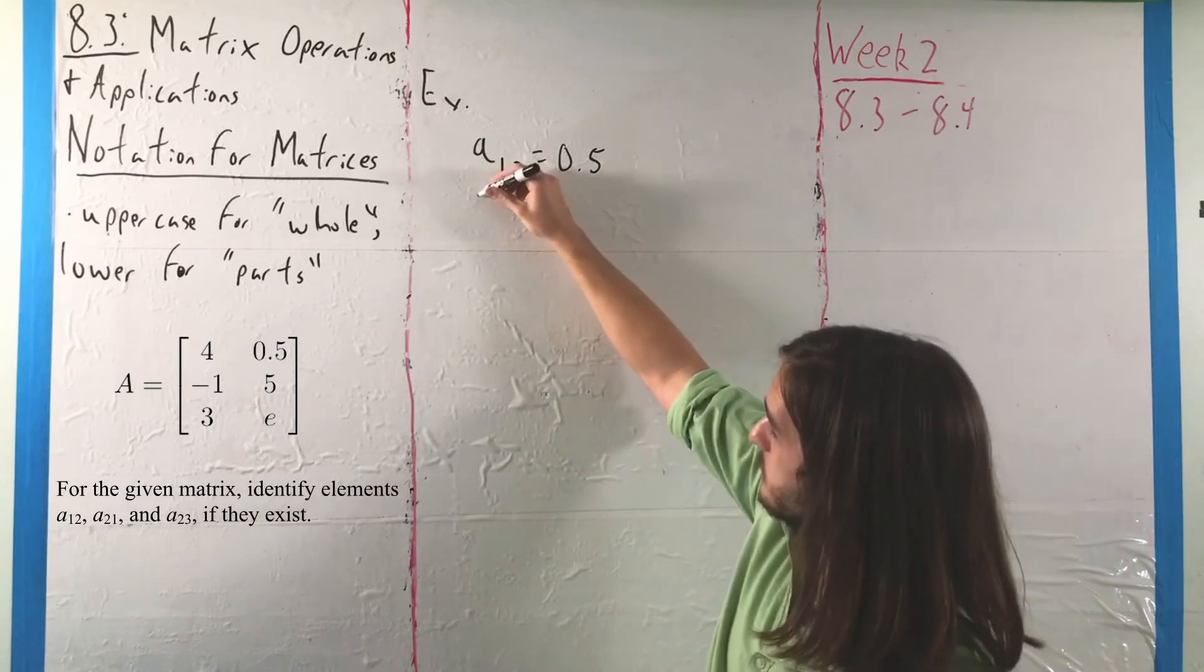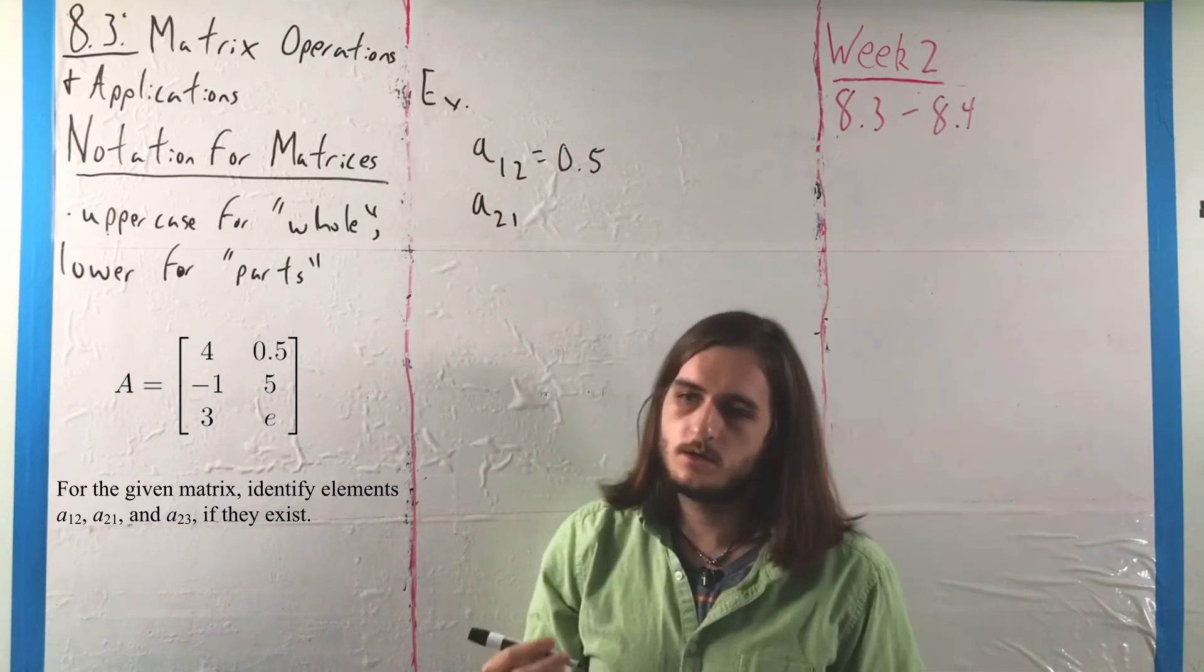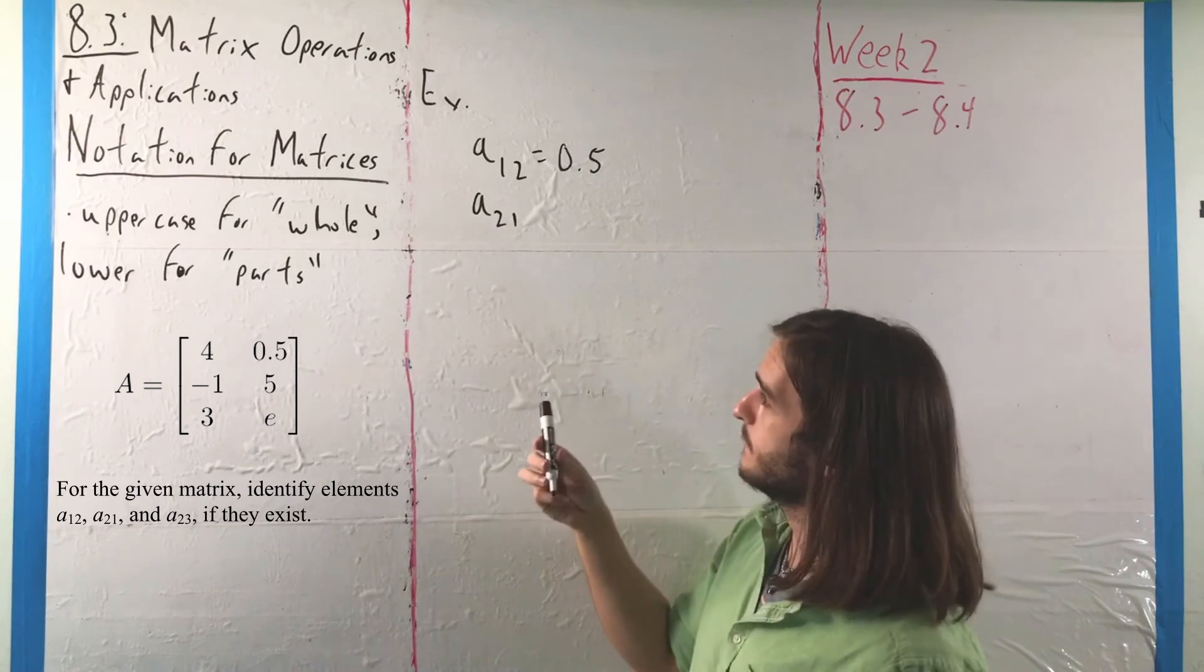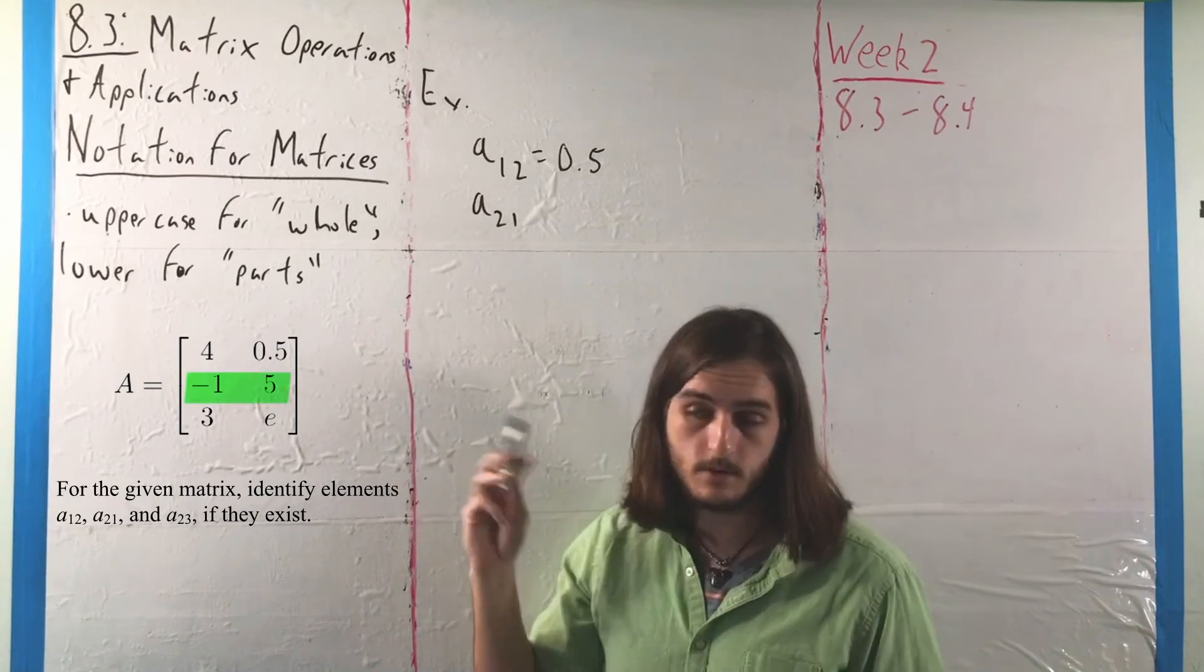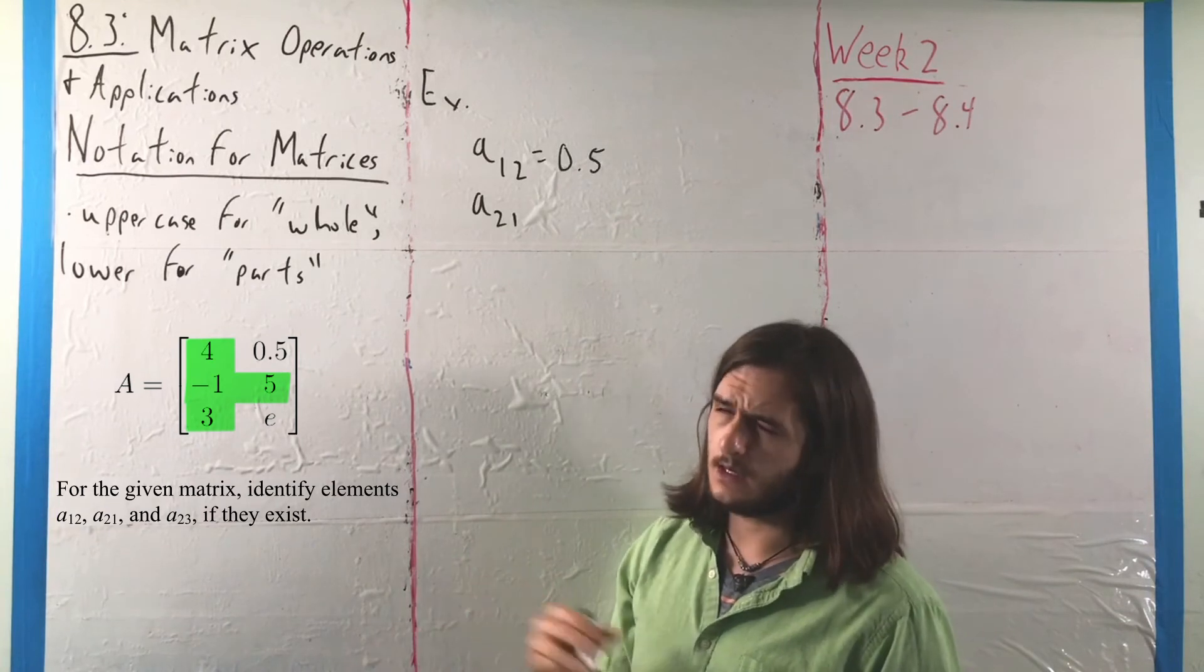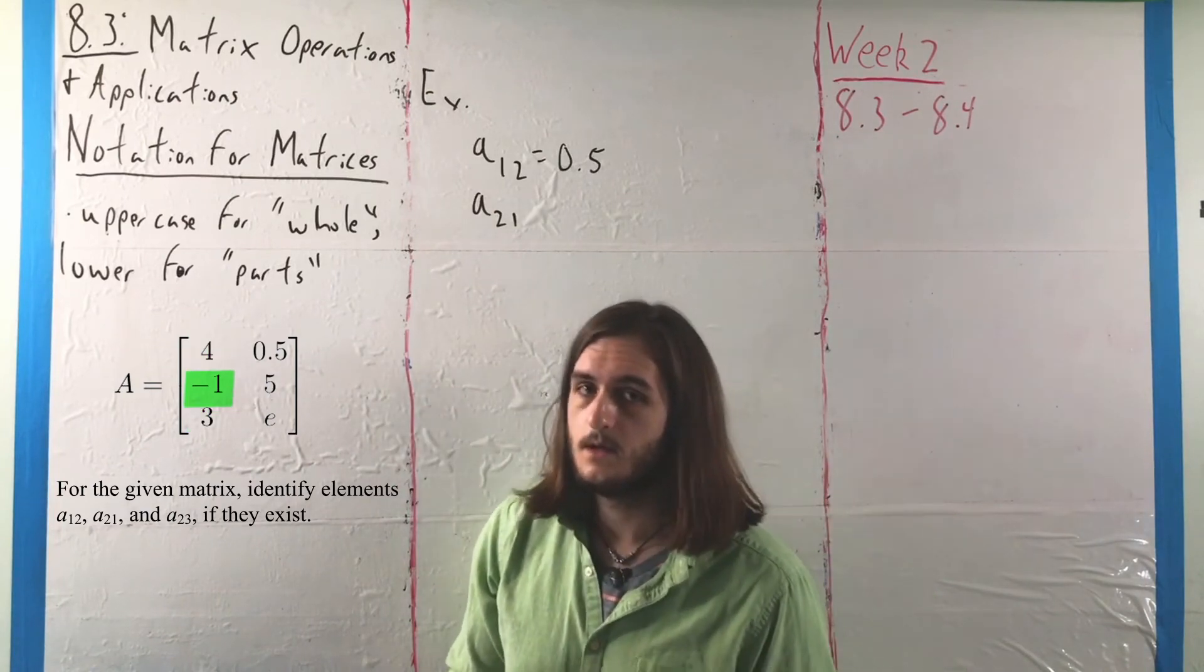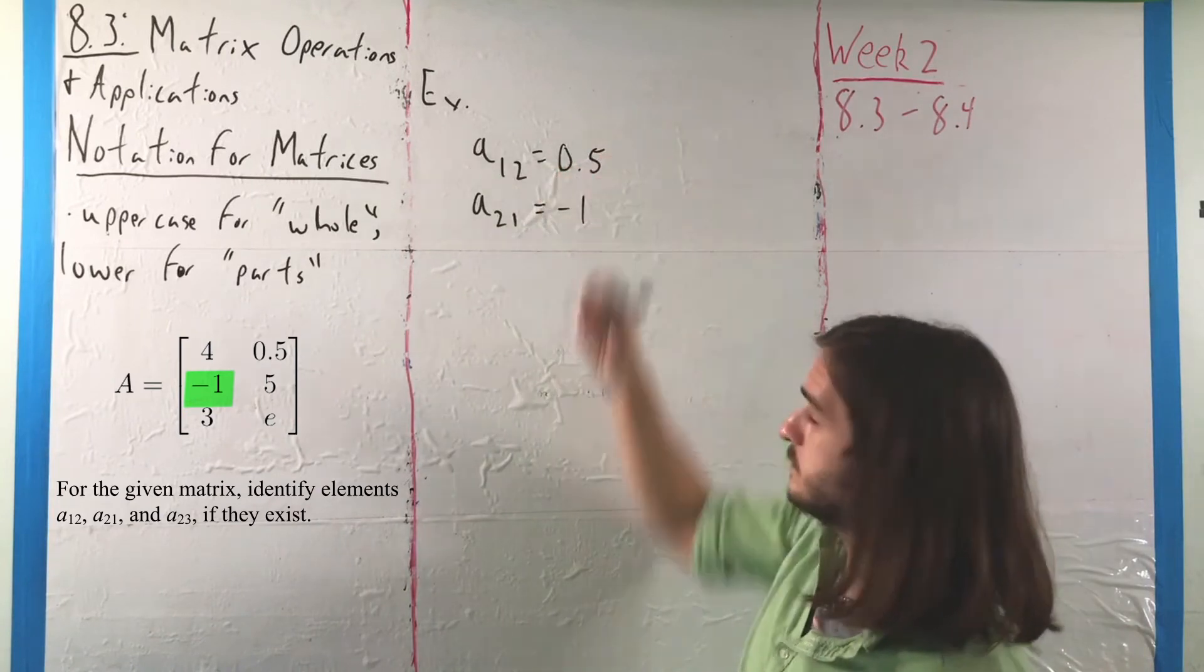For the next one, it might be natural to see a21 and think, why is that different from a12? But you have to be careful with what this notation means. We're identifying the element in row two, column one - the middle of the first column on the left side, which is negative one.